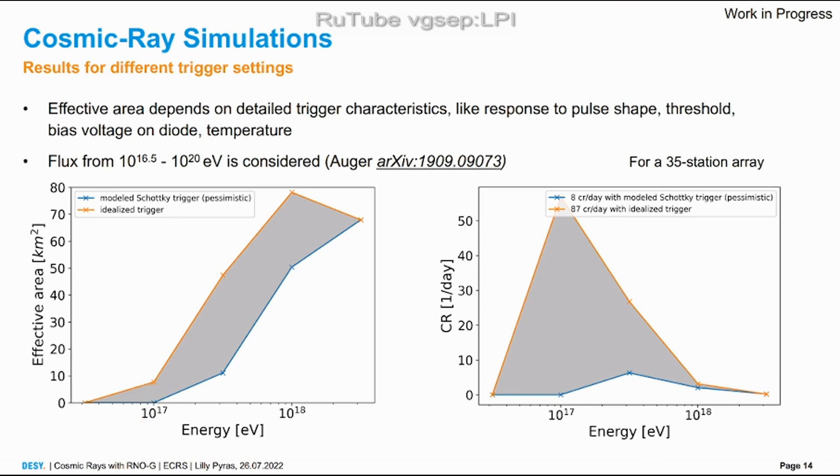If you fold that with the HG flux, which is of course a power law, you see that with the pessimistic scenario you really miss out on all the cosmic rays below 10^17, which makes the big difference between how many cosmic rays we expect per day. If we are able to measure it we get around 80, if we're not measuring it it's like eight.